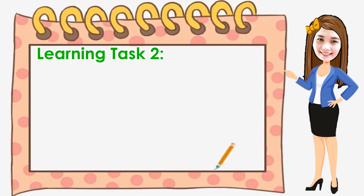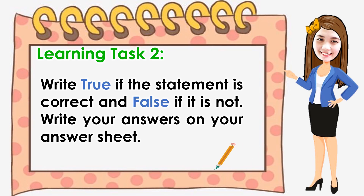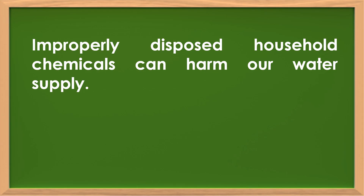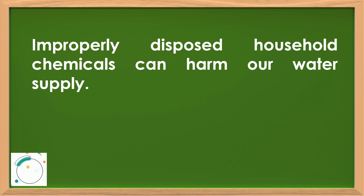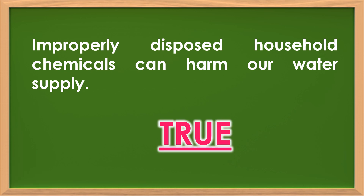Now it's time for the next activity — Learning Task 2. Write true if the statement is correct and false if it is not. Write your answers on your answer sheet. Statement: Improperly disposed household chemicals can harm our water supply. The answer is true.